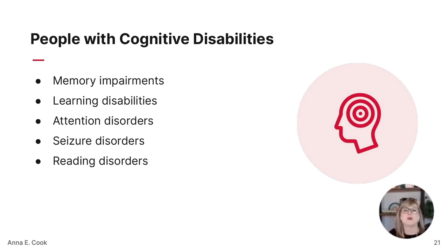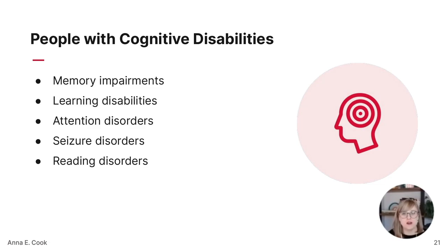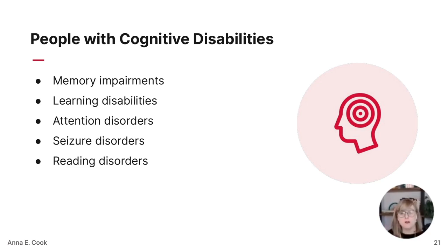Last but certainly not least, keep in mind people with cognitive disabilities, who tend to be the least understood in product design and development. This includes people with autism, attention deficit, dyslexia, seizure disorders, and more. Improved usability as a whole is super valuable here — things we call better UX directly correlate to improved accessibility for people with cognitive disabilities. Better copy, hierarchy, structure, and consistency all play a big part in serving users with cognitive disabilities.